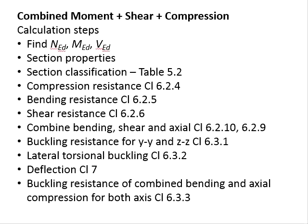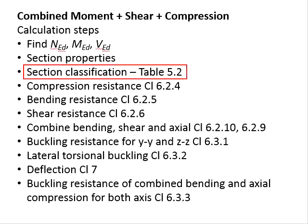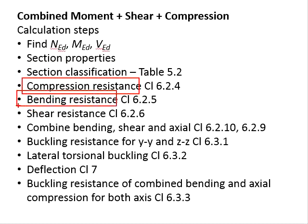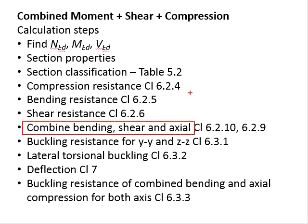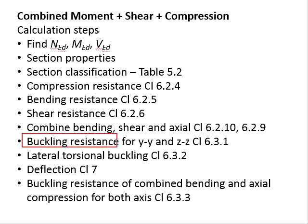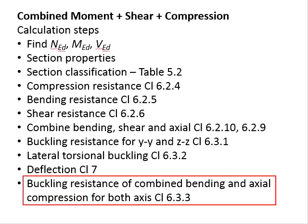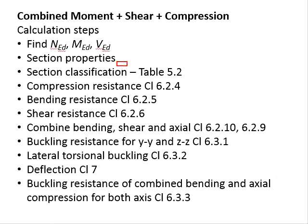This slide outlines the calculation steps to design a member subjected to combined moment, shear, and compression. First, determine the axial force, bending moment, and shear loads. Obtain the section properties from the table of properties. Perform section classification referring to Table 5.2. Then check the compression resistance, bending resistance, and shear resistance using the relevant clauses. Next, check the effects of combined bending, shear, and axial loads. Check for buckling resistance in the major and minor axes, check for lateral torsional buckling, check for deflections, and finally check for buckling resistance under combined bending and axial compression in both axes. The relevant clauses are outlined here.